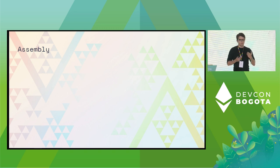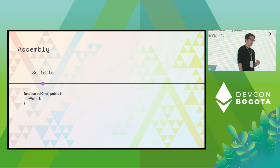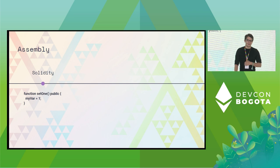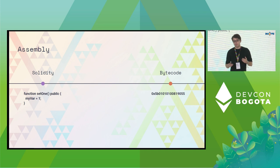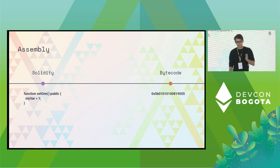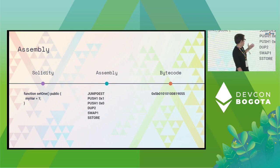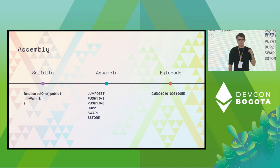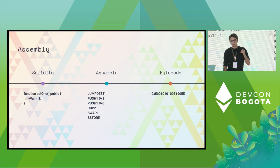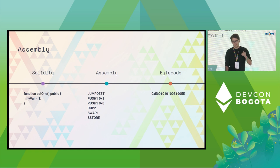Assembly lives in between the code that we as developers write and the code that a machine interprets. On one hand, we have Solidity, which is relatively easy to read and reason about. On the other end of the spectrum, we have bytecode, which is pretty much impossible for humans to read but very efficient for machines. In between Solidity and bytecode, we have assembly — an intermediate language or intermediate representation. The opcodes you see in assembly are what actually run in the EVM. Solidity or Vyper code is compiled down to opcodes and then runs in the EVM.